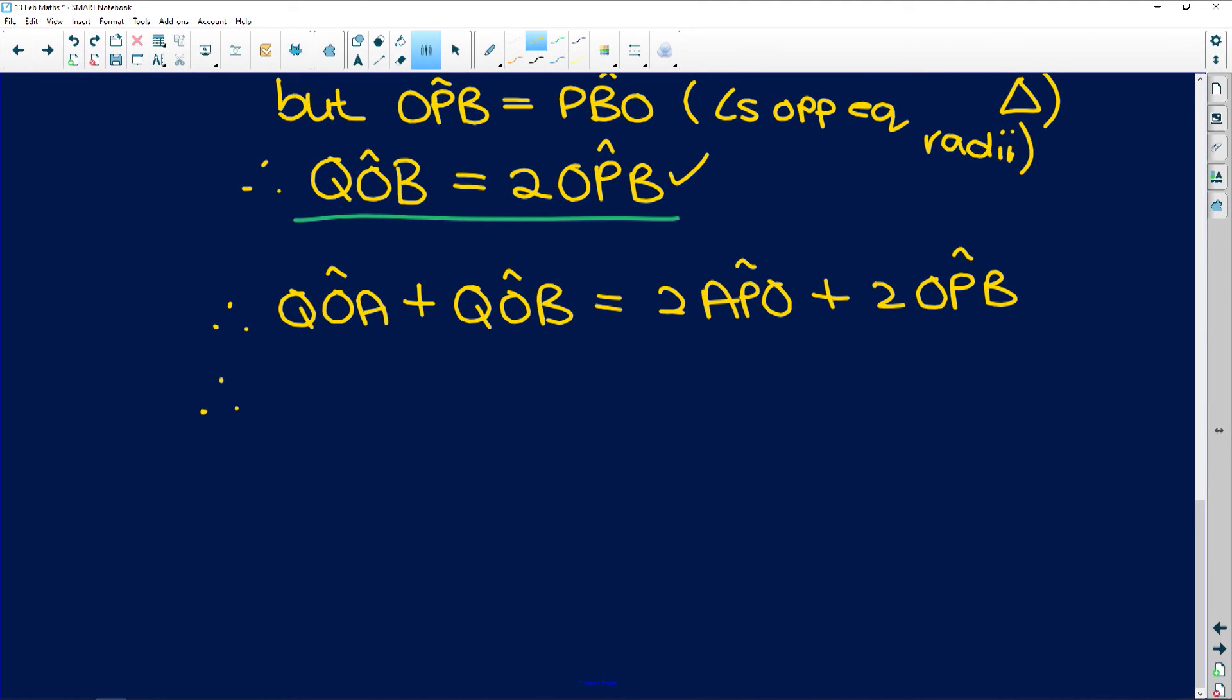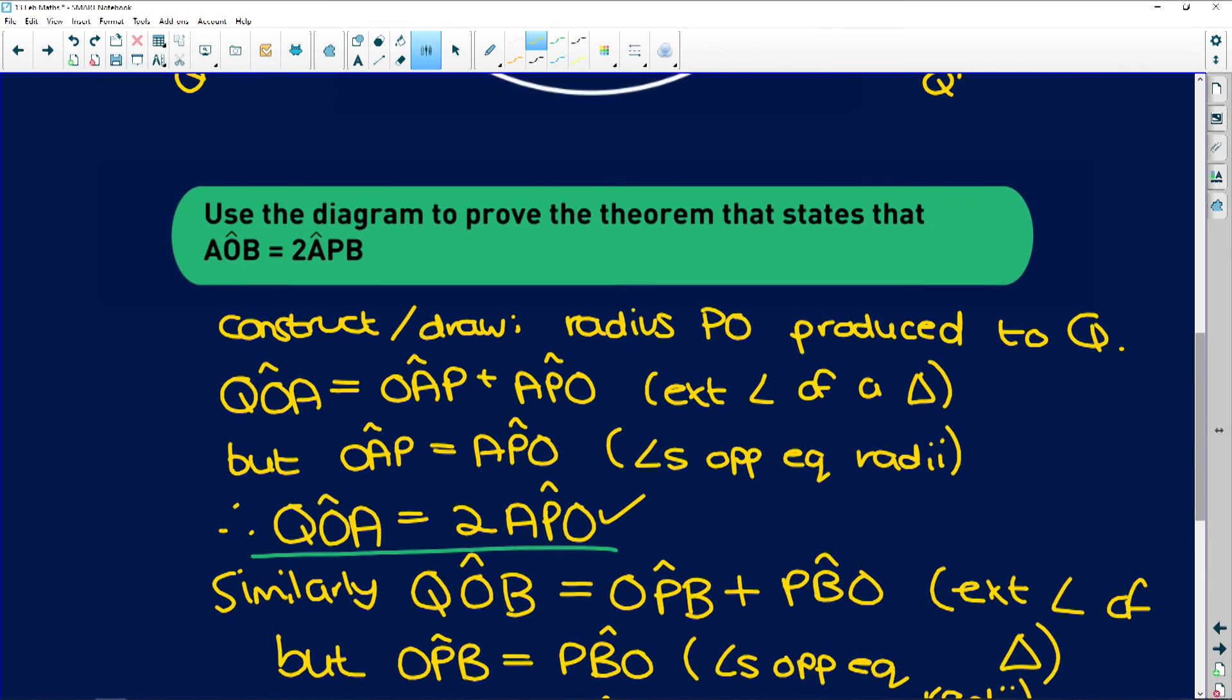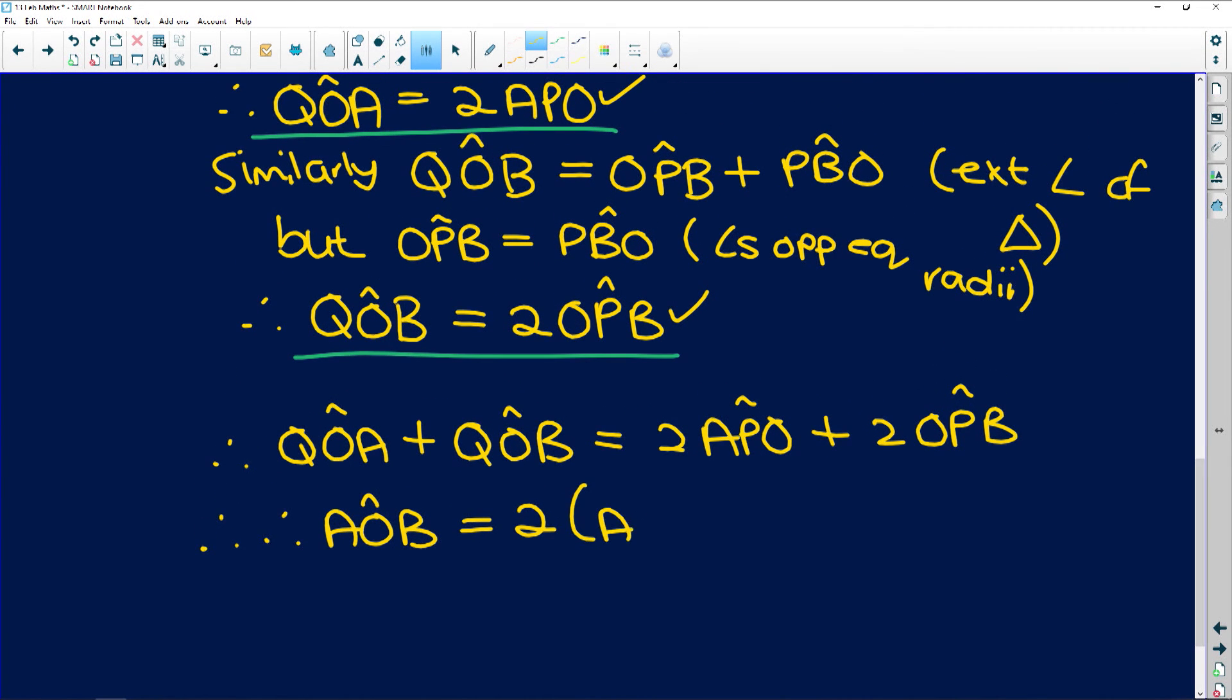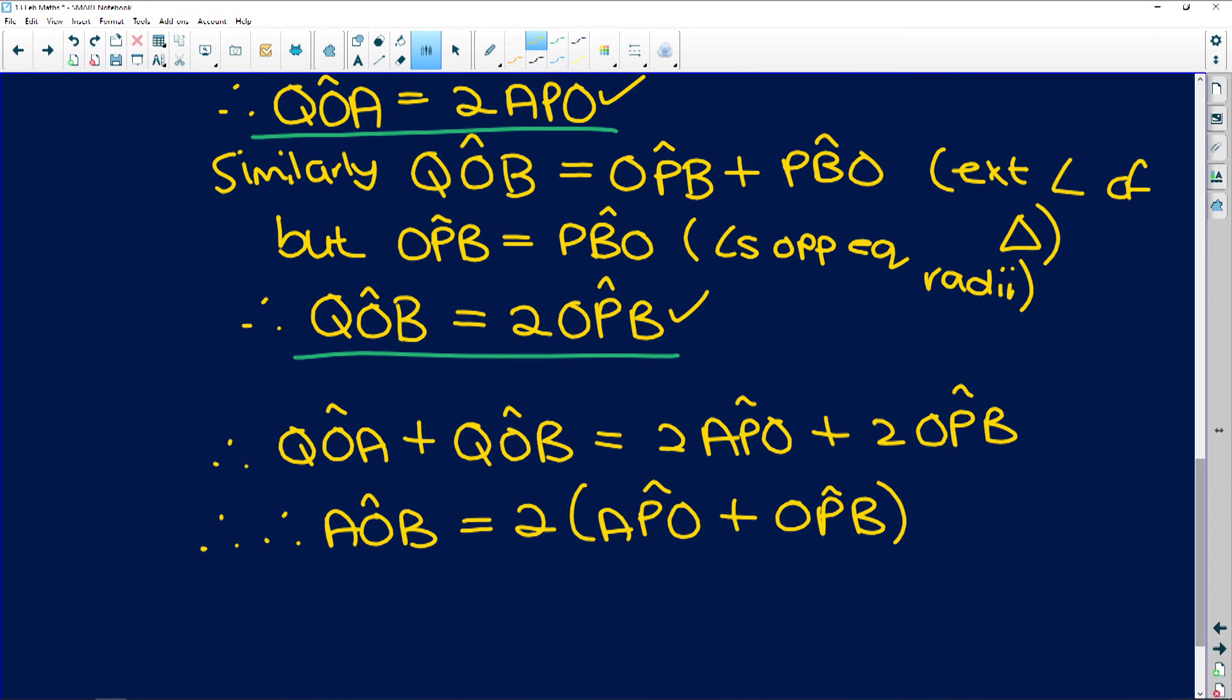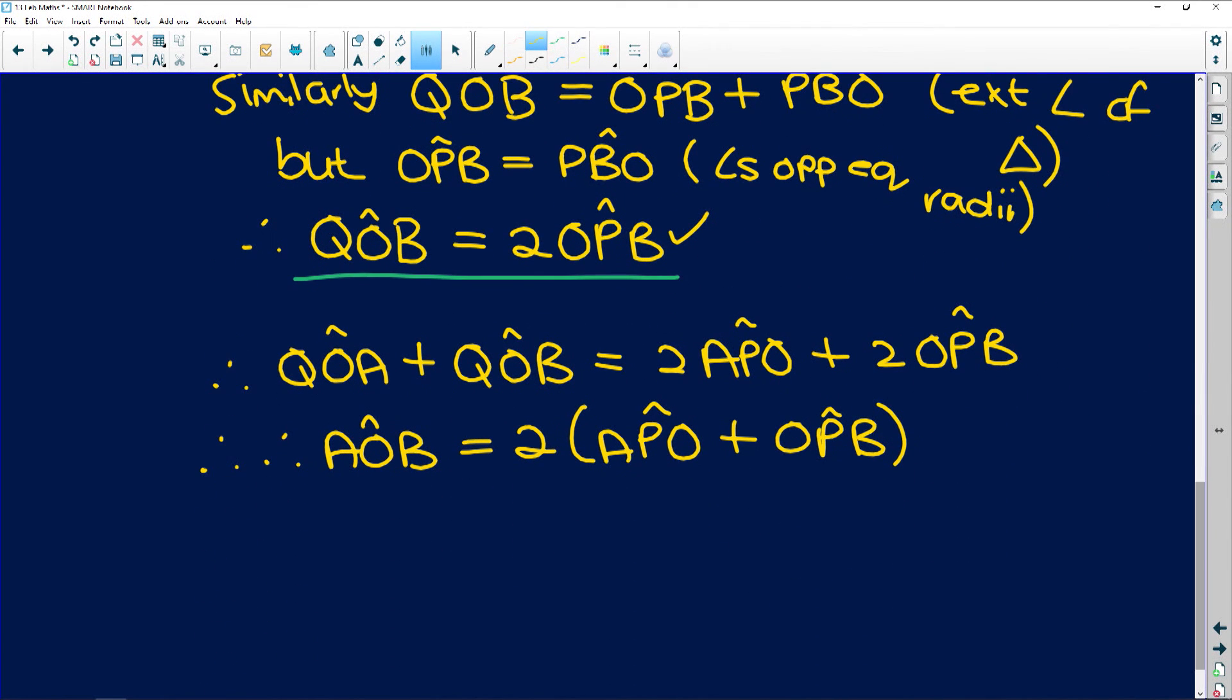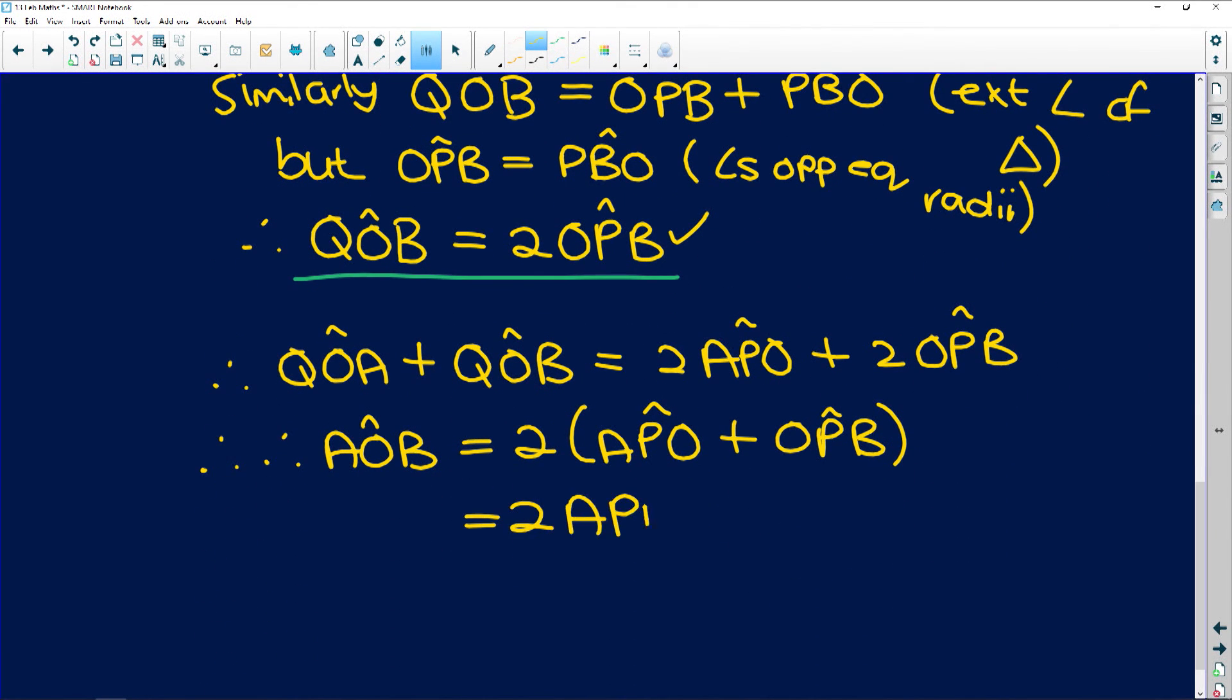And so these two angles that add up to each other are going to give us that angle AOB. Therefore, AOB is equal to 2 times APO plus OPB. Now if you look over here, APO is this green angle here, plus OPB. If I add them together, I get that whole angle at the circumference, which is that APB, equal to 2 times angle APB.